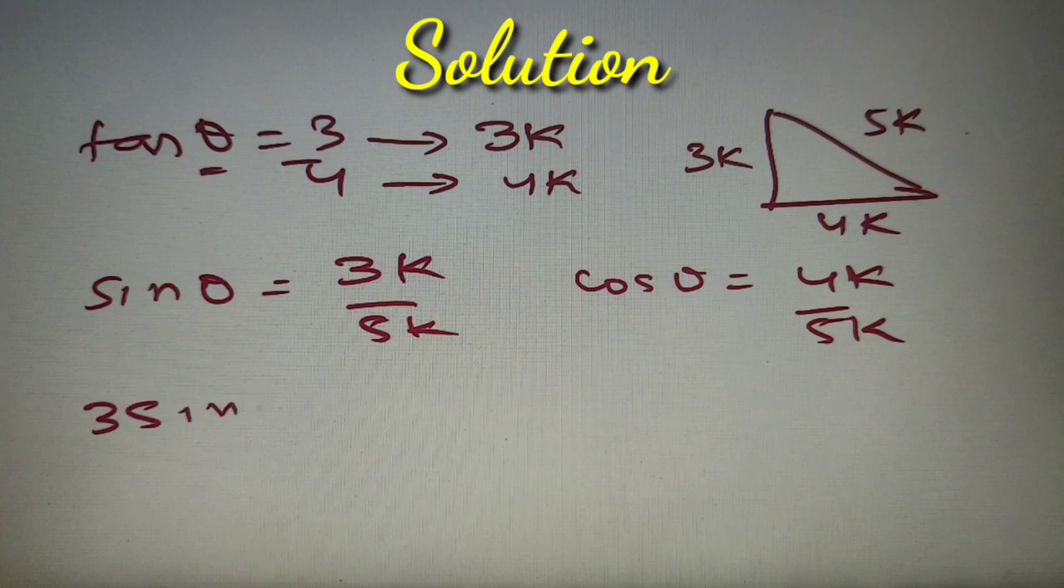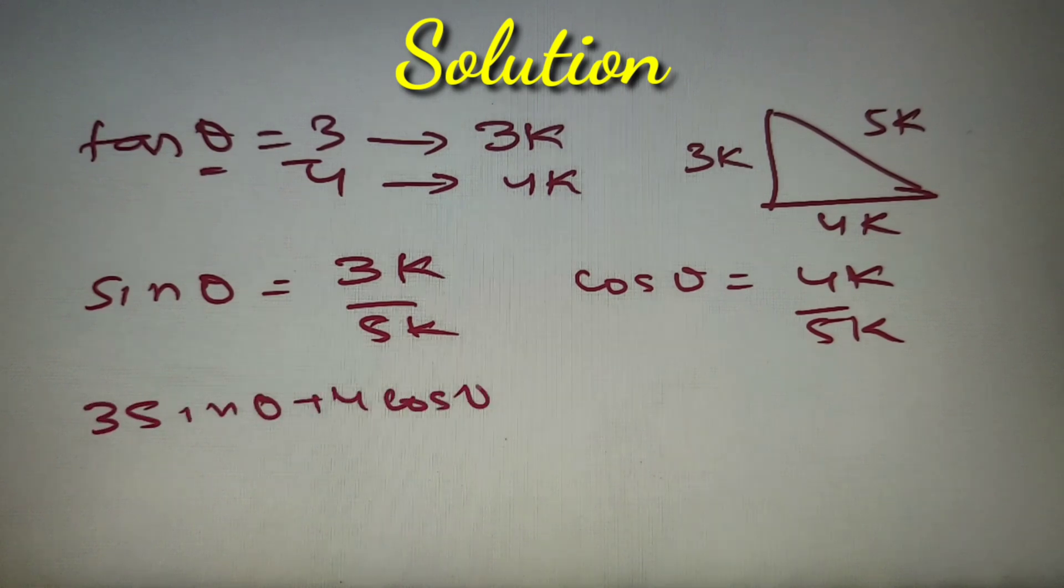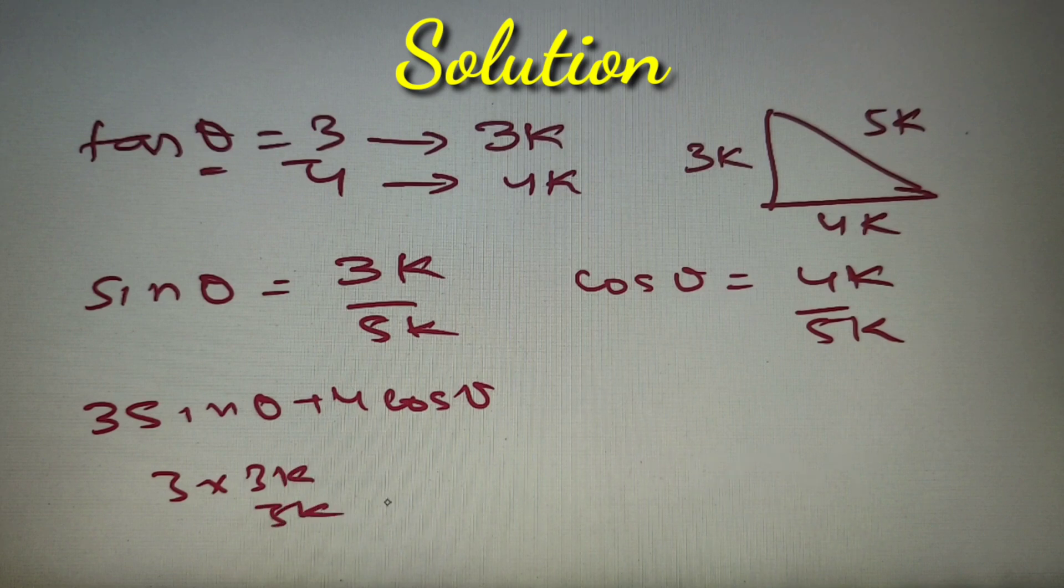Now we have to maximize 3 sin theta plus 4 cos theta. So that is equal to 3 into 3k by 5k plus 4 into 4k by 5k.